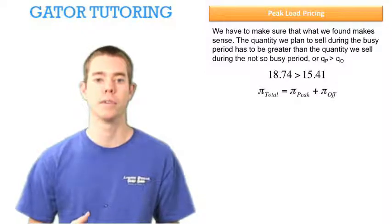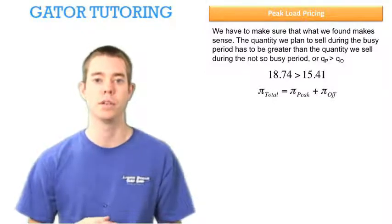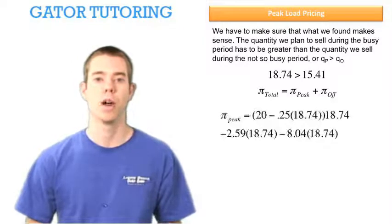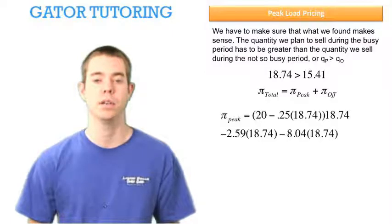To find total profit, we're going to add the profit from the peak period to the profit from the off peak period. So remember our profit peak period formula, now we're going to plug in 18.74 everywhere we see QP, and we solve for profit during the peak period to be 87.794.